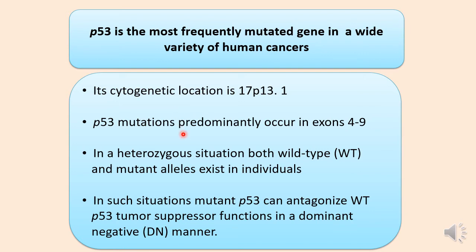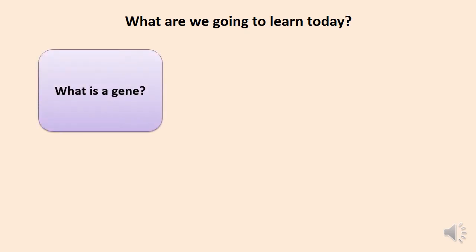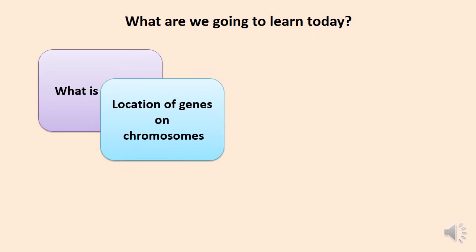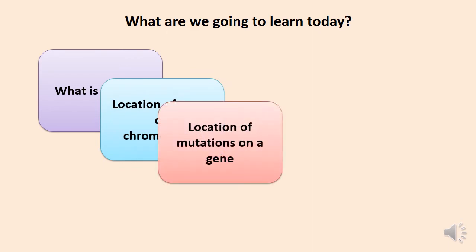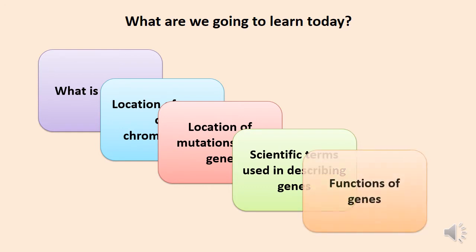To understand the second statement you have to know about the structure of genes. To understand the third and fourth statements, you have to know scientific terms such as heterozygous, alleles, and dominant. So today you are going to learn how to identify the location of genes on chromosomes, the location of mutations on a gene, scientific terms used in describing genes, and finally the functions of genes.